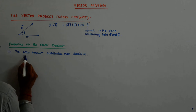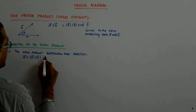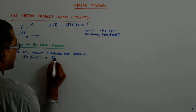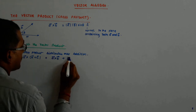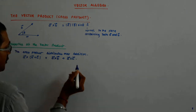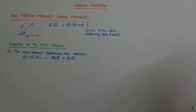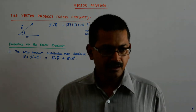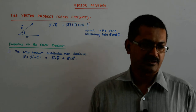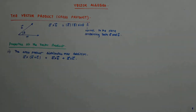So if I have a cross (b plus c), then it becomes a cross b plus a cross c. The cross product distributes over addition in this way.